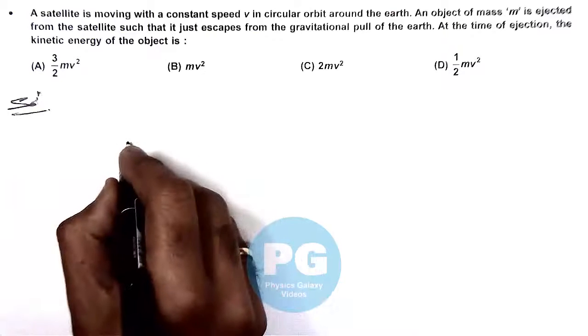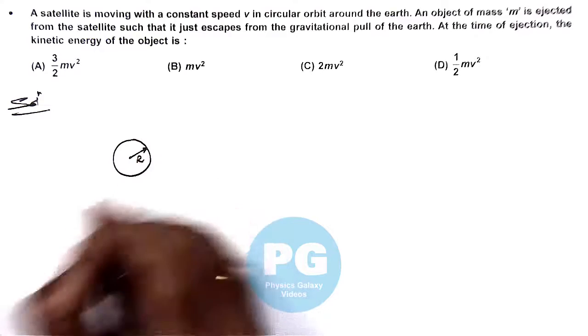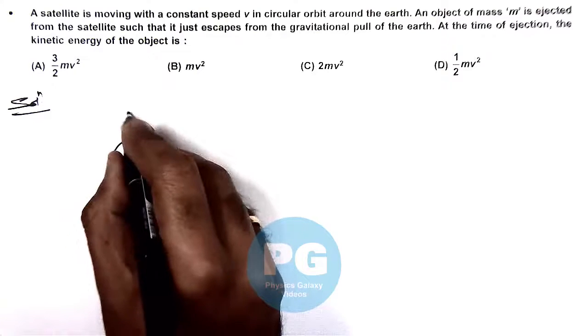So in this situation, we have Earth with radius r and an orbit of radius x.